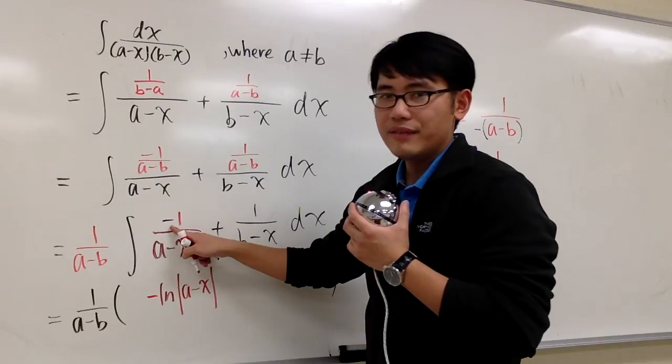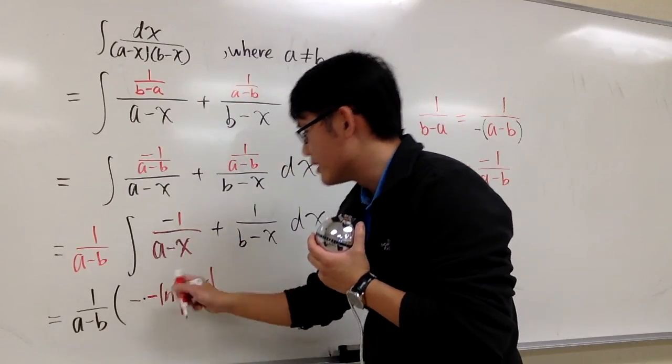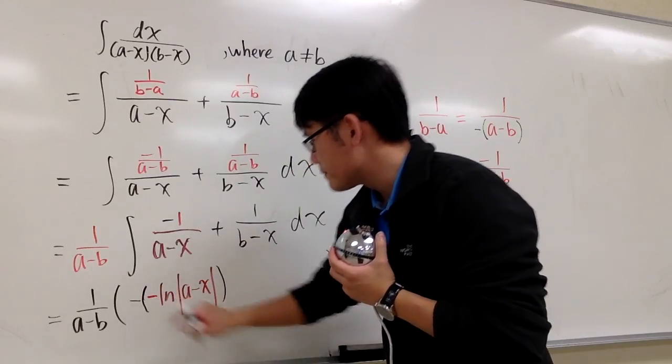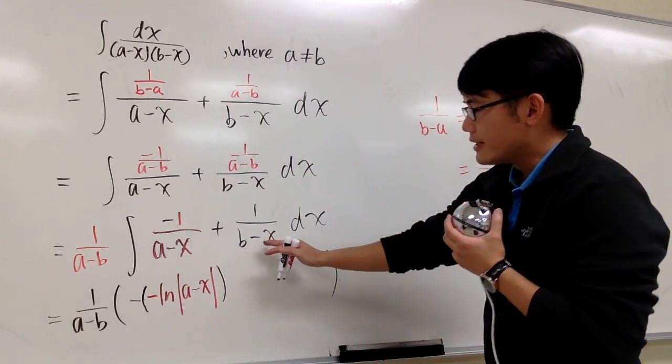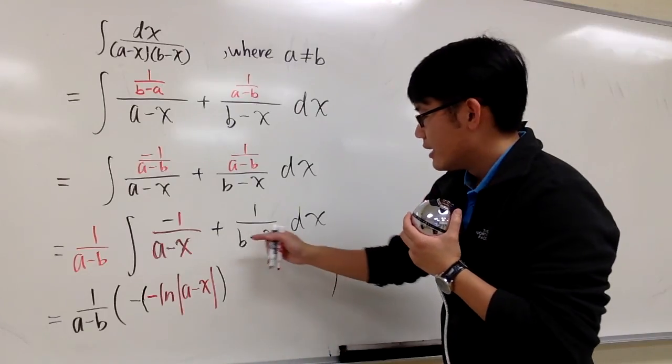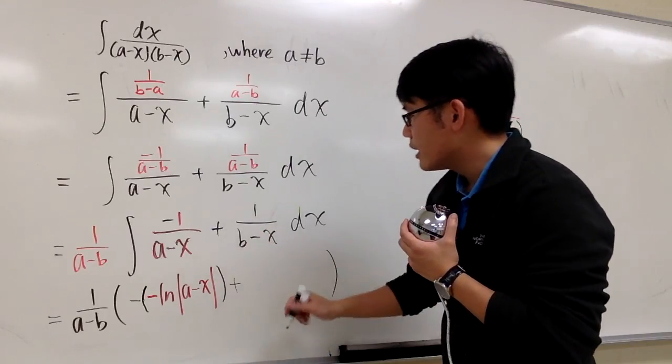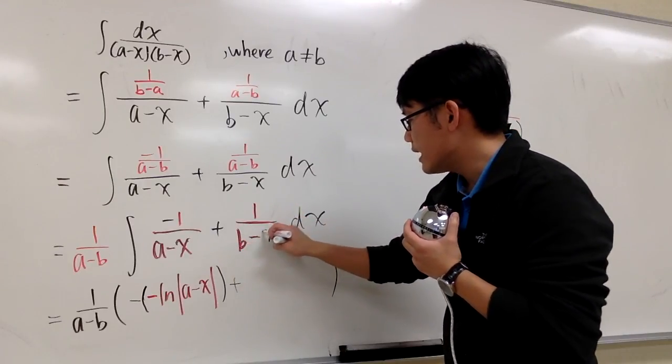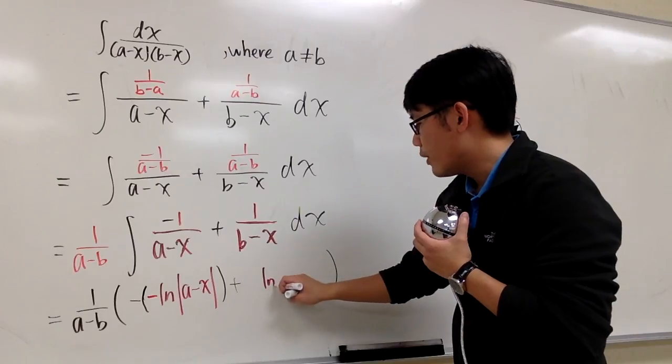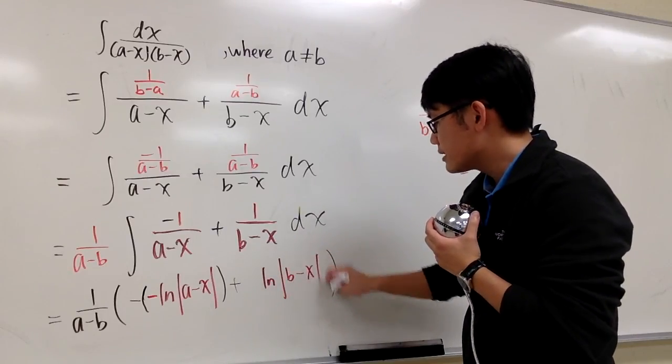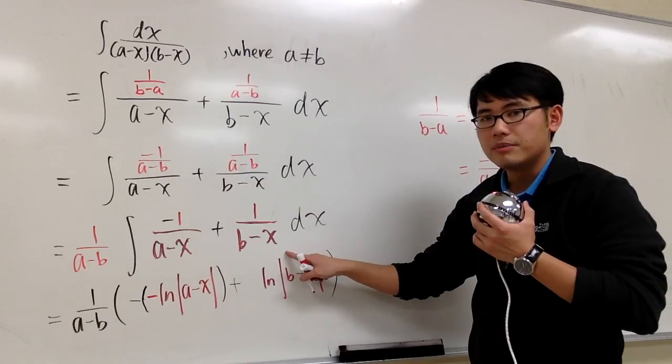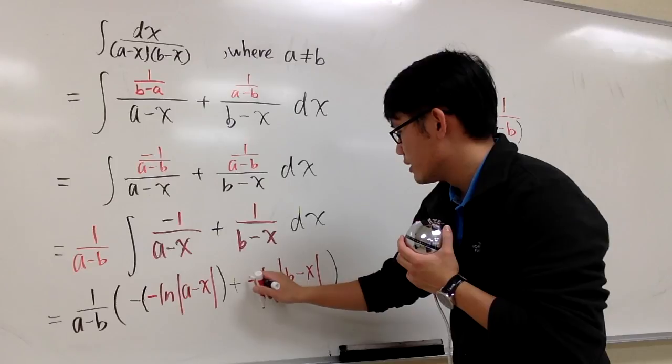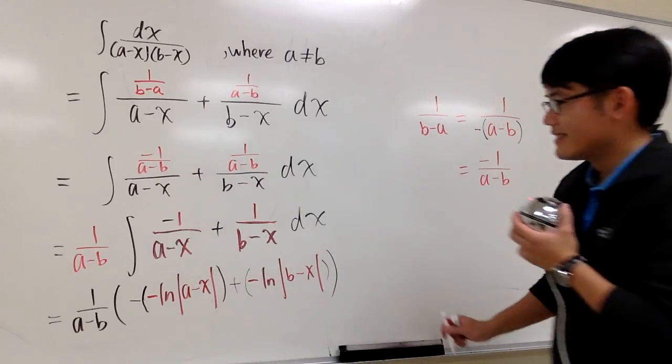However, we still have this negative. So technically, we have a negative times negative like that. And for the second part, very similar. We're going to have, let's put the addition sign right here, but then the integral 1 over (b-x) is going to be ln, absolute value, (b-x). But then the derivative of the bottom is negative 1. So therefore, I need a negative right here. And I will just put a little parentheses like that.